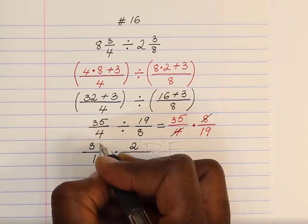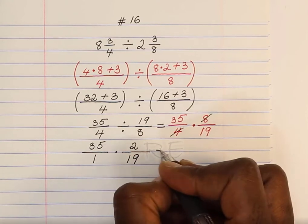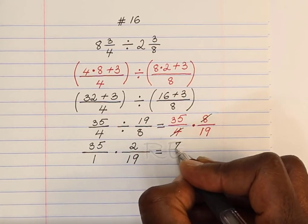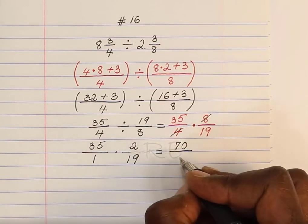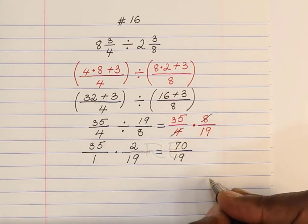Well, 25 is 7 times 5, so it stays unchanged. And 19 is a prime number, so it stays unchanged also. 35 times 2 is 70 and 19 times 1 is 19.